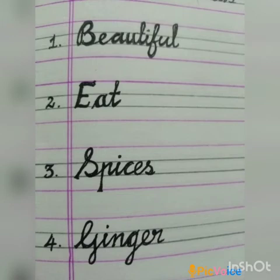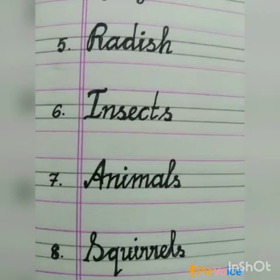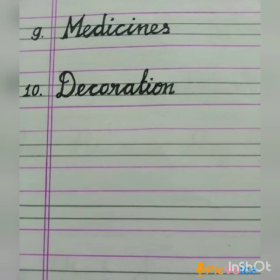Tenth one: Decoration. Now let us revise all the dictation words: 1. Beautiful, 2. Eat, 3. Spices, 4. Ginger, 5. Radish, 6. Insects, 7. Animals, 8. Squirrel, 9. Medicines, 10. Decoration.